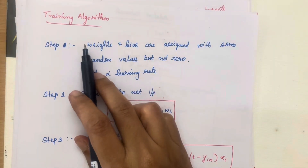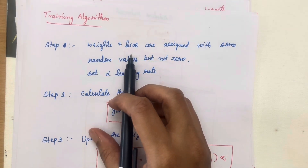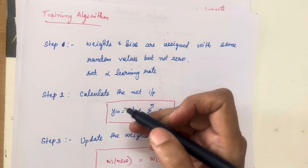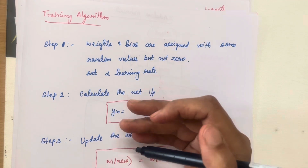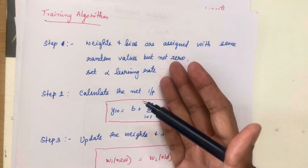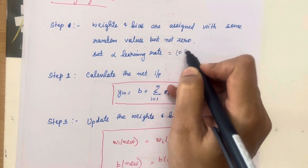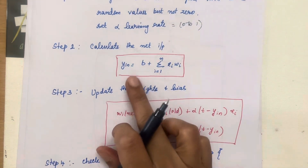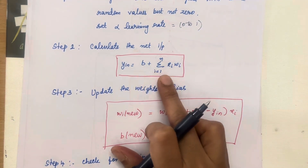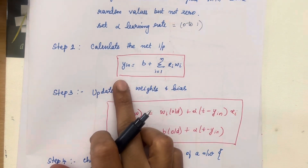Moving to the training algorithm: the first step is to initialize weights and bias with some random values, not zero. In previous networks like Hebbian or perceptron, we initialized with zero, but in ADALINE we use random values. Set the learning rate alpha between 0 and 1. Step two: calculate y_input, which equals bias plus the summation of xi × wi. The inputs along with the weights give you y_input.